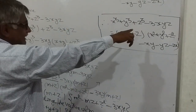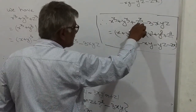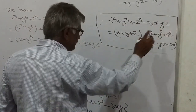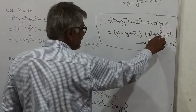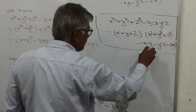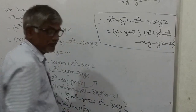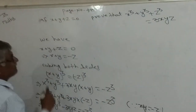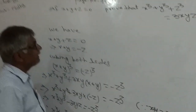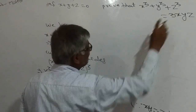So x³ + y³ + z³ − 3xyz = (x + y + z)(x² + y² + z² − xy − yz − zx). Now prove that if x + y + z = 0, then x³ + y³ + z³ = 3xyz.